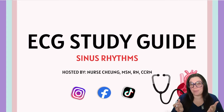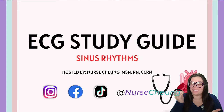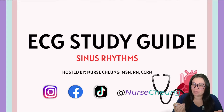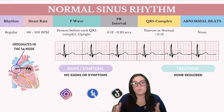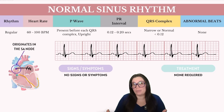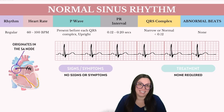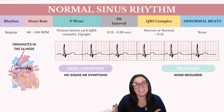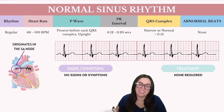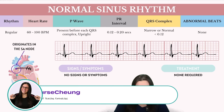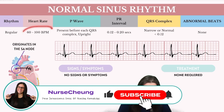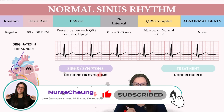Today we're going to be talking about the ECG rhythms of sinus rhythms. Normal sinus rhythm is the most common cardiac rhythm that you're going to see and typically it's observed in healthy individuals on a daily basis. Its heart rate should be between 60 to 100 beats per minute.